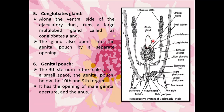The fifth organ is the conglobate gland, also called the phallic gland. It is located on the anterior side of the mushroom gland. Along the ventral side of the ejaculatory duct runs a large multi-lobed gland called the conglobate gland. This gland also opens into the genital pouch by a separate opening, as visible in the diagram. The function of the conglobate gland will be studied in the next slide.